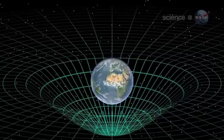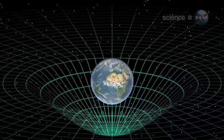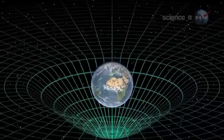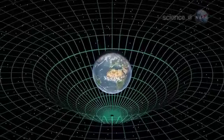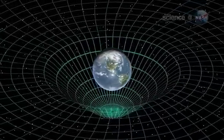The mass of Earth dimples this fabric, much like a person sitting in the middle of a trampoline. If Earth were stationary, that would be the end of the story. But our planet spins, and the spin should pull the dimple around in a four-dimensional swirl.